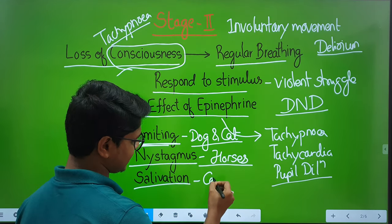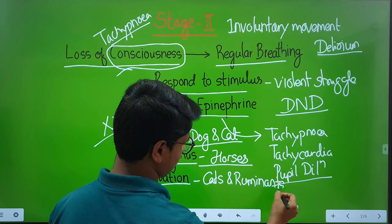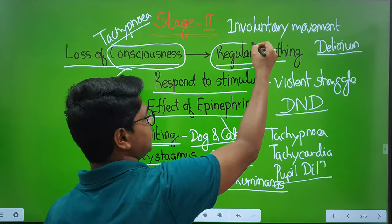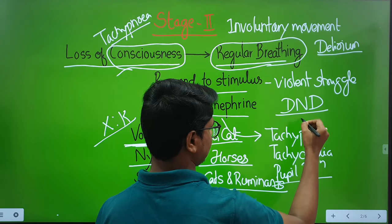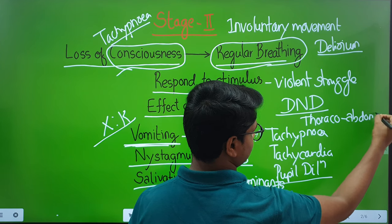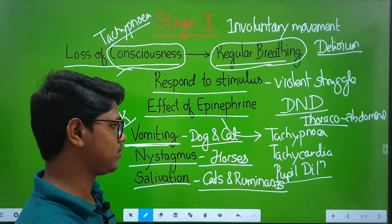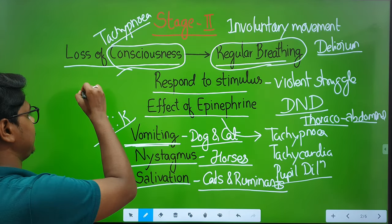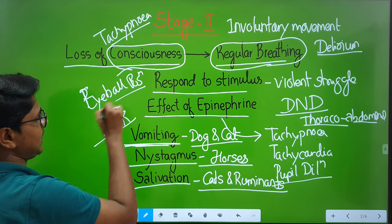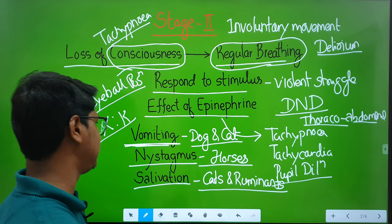Salivation is present in case of cats and ruminants. At the end of Stage 2, you will find regular breathing. Usually in Stage 1 and Stage 2, the breathing pattern is thoraco-abdominal — meaning both thoracic muscles and abdominal muscles are involved in respiration. Another thing to remember: the eyeball position in Stage 1 and Stage 2 is variable — it may be medial, lateral, dorsal, ventral — whatever. The term is variable.